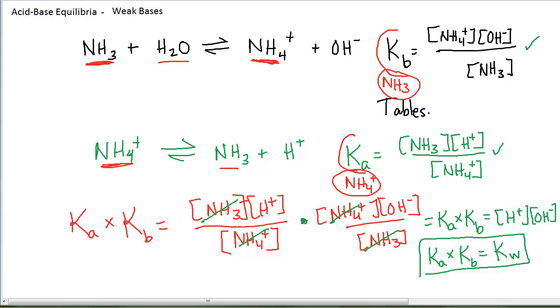And so if I know the Ka value for the ammonium ion, if I've got that in a table somewhere, but I need the Kb for ammonia and I can't find that, I can use this relationship to calculate the Kb for ammonia using the Ka for its conjugate, the ammonium ion, and 10 to the minus 14, which is the Kw.